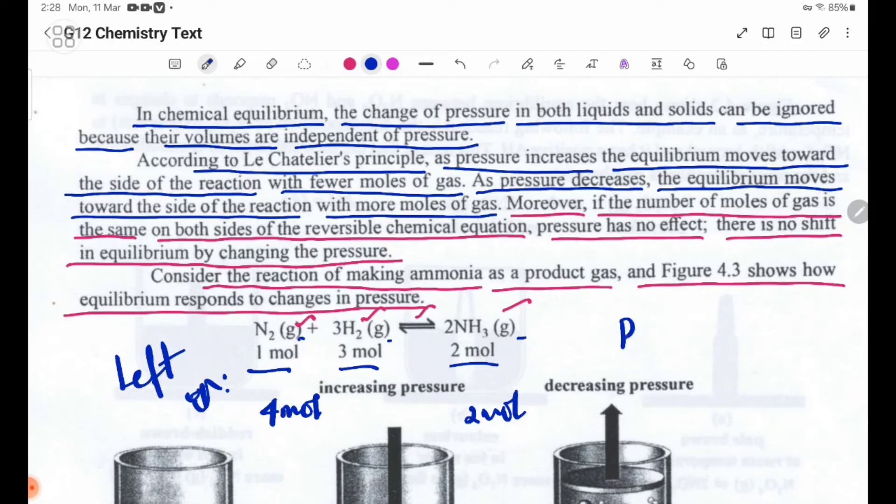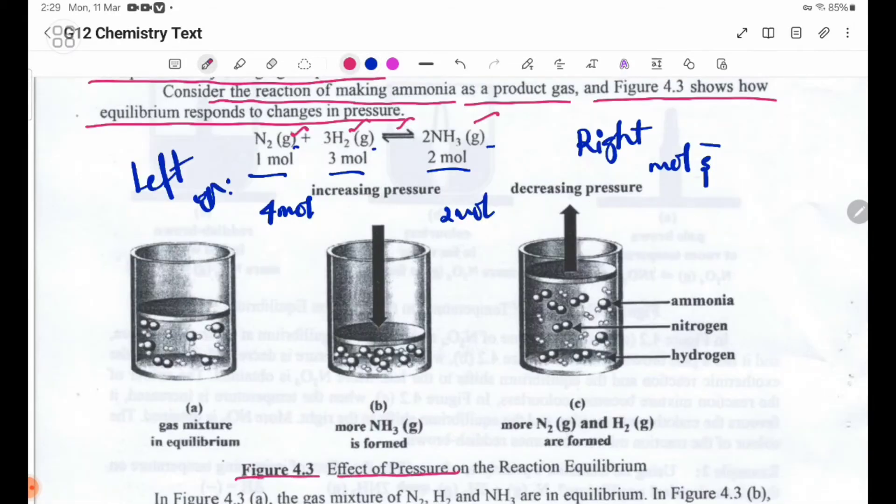Equilibrium is shown in the diagram. Figure 4.3 Effect of Pressure on the Reaction Equilibrium. Figure 4.3a shows nitrogen and hydrogen gas in equilibrium. In Figure 4.3b, the piston is used and pressure increases.